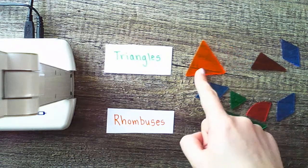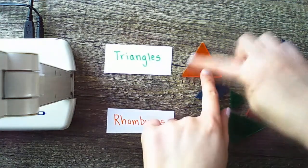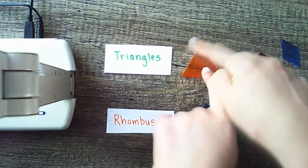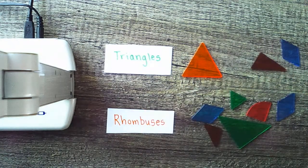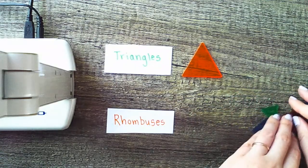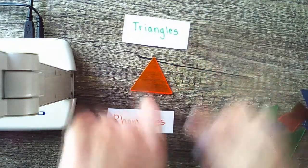So this first one right here, I notice that it has 1, 2, 3 sides, as well as 1, 2, 3 vertices. That's a defining attribute of a triangle. So I'm going to keep it in the triangle pile. Let's actually move it like this. That's a little bit easier.